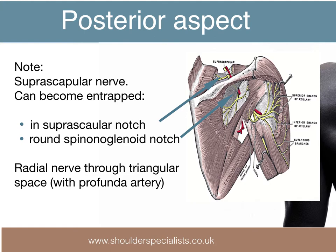Other noteworthy anatomical features of the posterior aspect of the shoulder include the course of the suprascapular nerve. This passes back through the suprascapular notch, supplies the supraspinatus, then curves around the spinoglenoid notch to supply the infraspinatus. Thus, if the nerve is compressed at the suprascapular notch, both the supra- and infraspinatus muscles will be affected. If compression occurs at the spinoglenoid notch, weakness and wasting of the infraspinatus muscle alone will result.